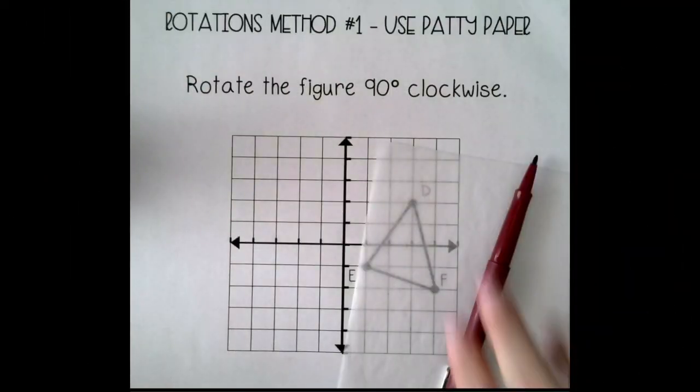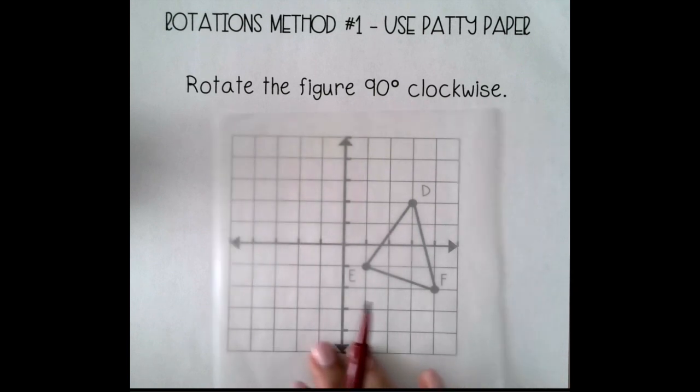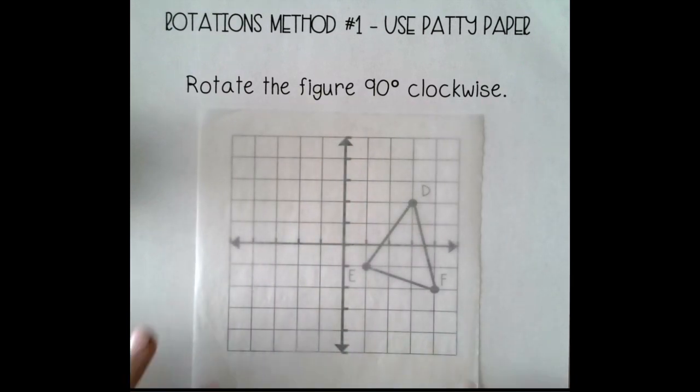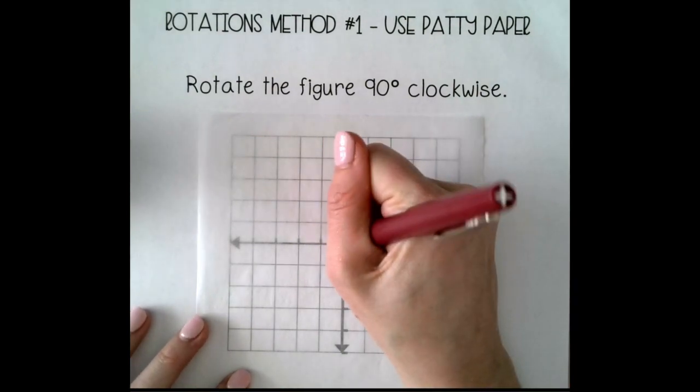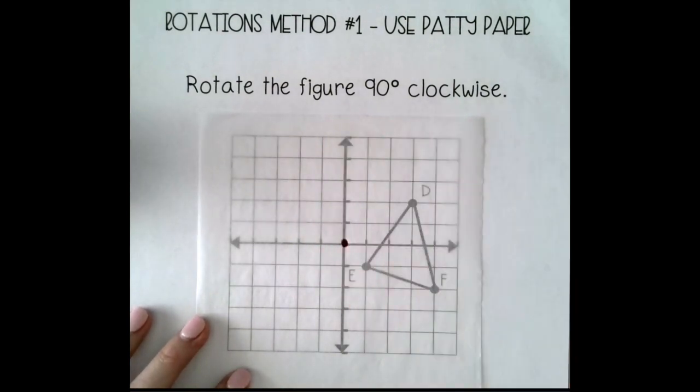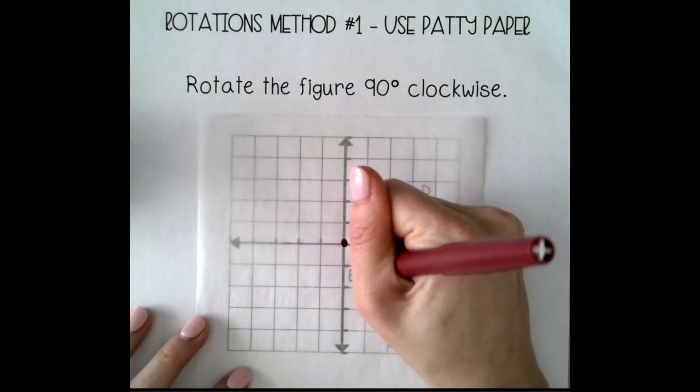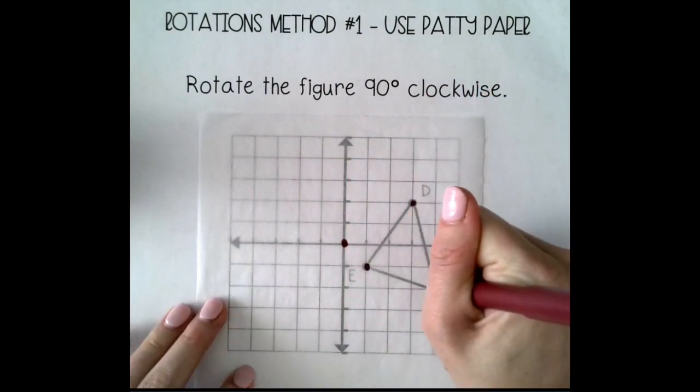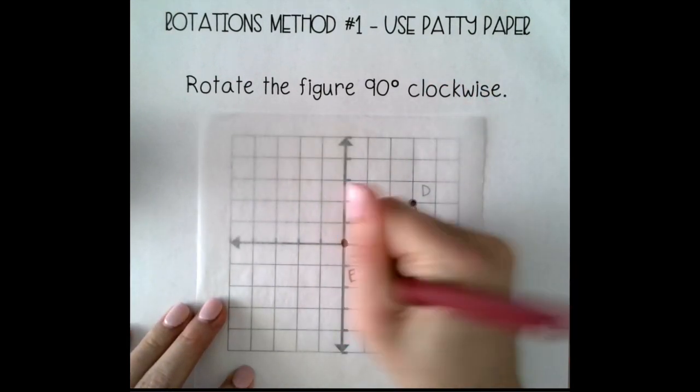The first method that I want to show you is using patty paper or wax paper. You can find this on Amazon. You want to line up your wax paper or your patty paper, and you want to plot 00 on the paper. Then you want to plot the points of your pre-image, and make sure that you label them as well.